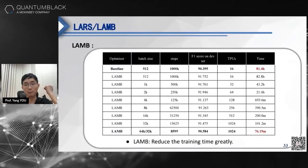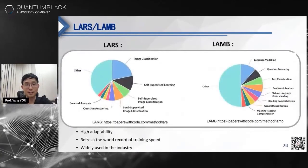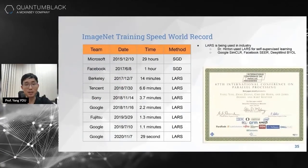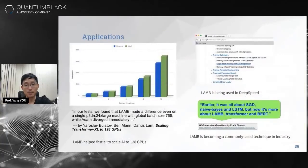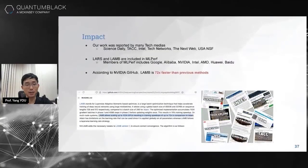We also reduced BERT training time from 3 days to 76 minutes. According to Papers with Code, our LARS and LAMB algorithms have been widely used in many different applications. Since 2017, all image training speed records were created by our LARS optimizer. Many industry companies use our approach — even on one server, our approach is much better. According to NVIDIA's public GitHub, our approach is 72 times faster than the previous approach.